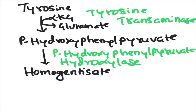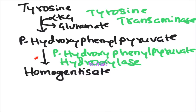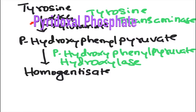P-hydroxyphenylpyruvate is converted into homogentisate, and this is done by P-hydroxyphenylpyruvate hydroxylase enzyme. This enzyme needs ascorbate — that is vitamin C — as its coenzyme, and also requires copper. The first enzyme, tyrosine transaminase, as with any transaminase, needs pyridoxal phosphate.